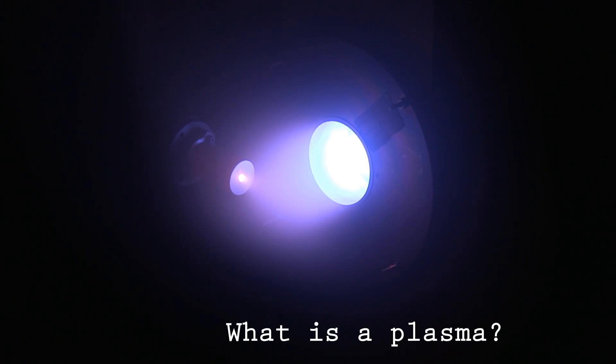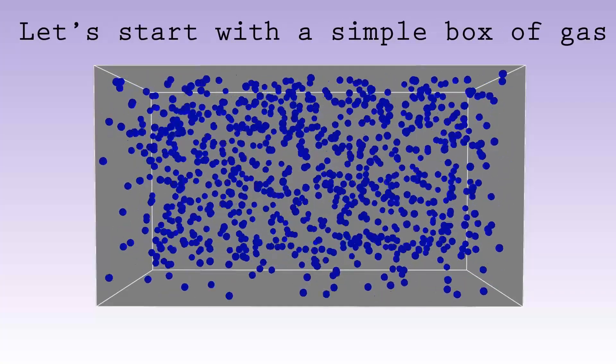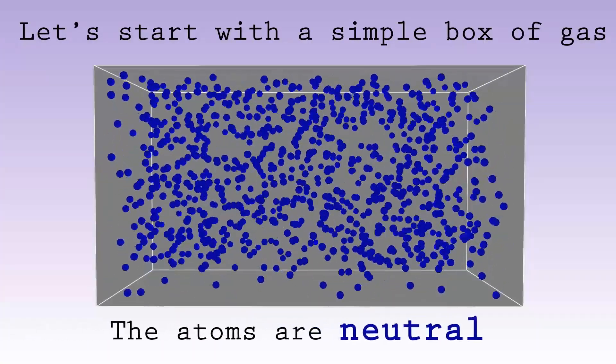Let's start with a simple box of gas. Normally, the gas atoms are electrically neutral.